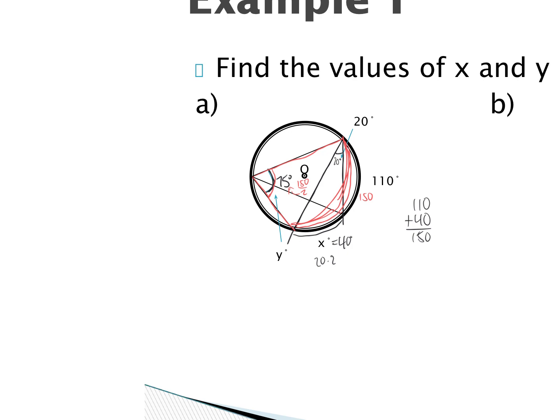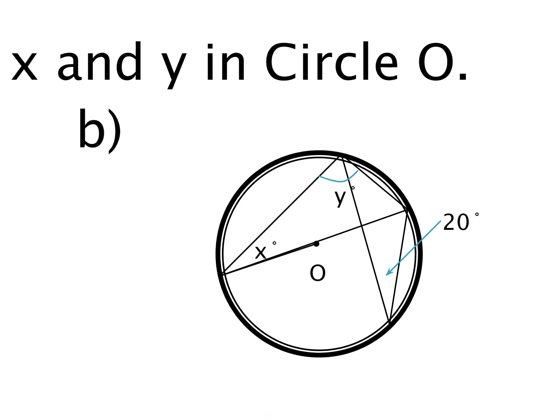Letter B: X equals 20 degrees. Why? The two inscribed angles form the same arc — therefore they must be congruent, so X must be 20 degrees.